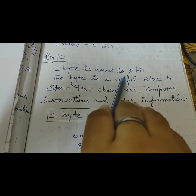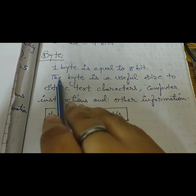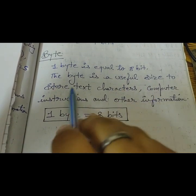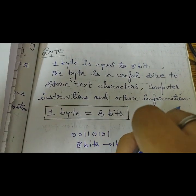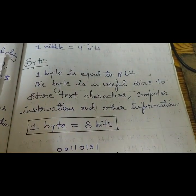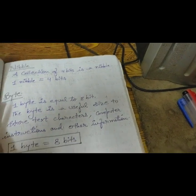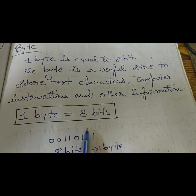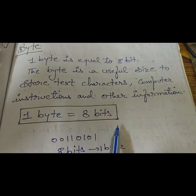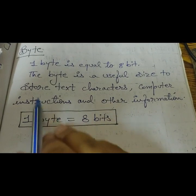One byte is equal to 8 bit. The byte is a useful size to store text, characters, computer instructions and other information. If you want to form characters or words, you need byte more than 8 bits or 8 bits to form a characters.